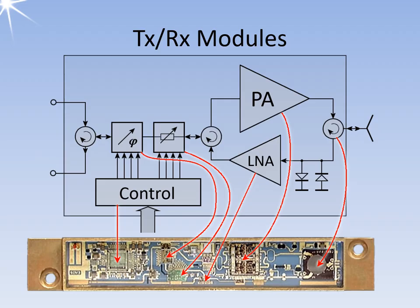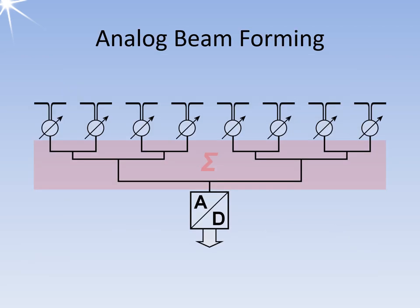In addition to the power amplifier (PA), the controlled phase shifters and attenuators, these transmit-receive modules also contain a low-noise amplifier (LNA) for the receive path, which is protected from excessive input power by a diode limiter. It is assumed that the down-converting and digitization take place centrally after an analog summation of the individual signals. With analog beamforming, the individual signals of each antenna element are summed in analog form at the high-frequency level and then digitized. With this technology, only a single antenna pattern can be realized per pulse period.